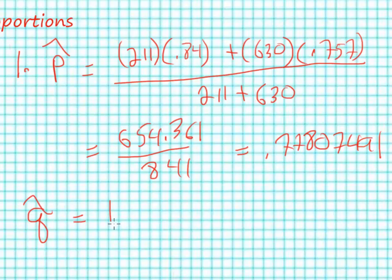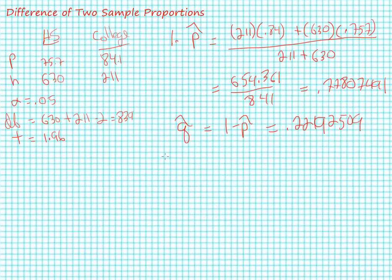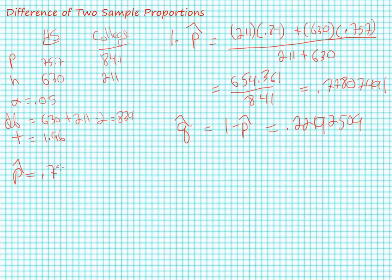Therefore, our q hat, which is equal to 1 minus p hat, is equal to 0.22192509. Rounding these things, I'm going to get a p hat equal to 0.778 and the q hat equal to 0.222.